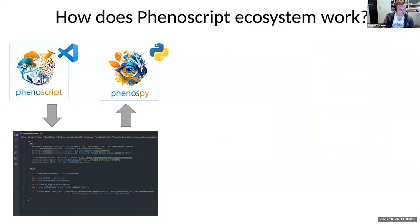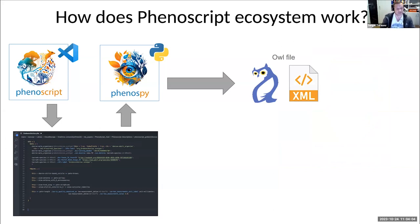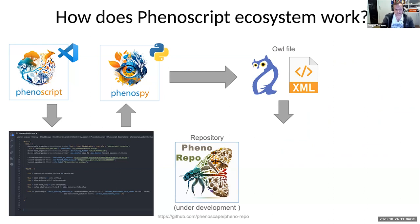As soon as you have your species description written using Phenoscript, various procedures can follow. For example, you can use the Phenospy package to convert your description to OWL format — a standard format to work with ontologies. OWL is an XML-like format, totally non-readable by humans but readable by computers. You can then upload this OWL file to Finorepo, a GitHub repository currently in a very premature state under development. The idea of Finorepo is to have a repository for traits, species, and phenotypes that works similar to GenBank, but for phenotypic data.